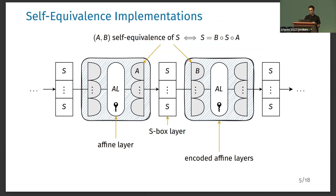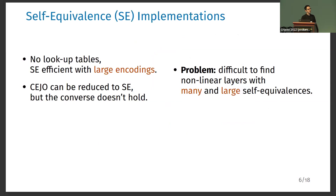The advantages of this type of implementation are that the encoded affine layers can be implemented with matrices, so no lookup tables are needed. This means that if the S-box layer or the non-linear layer has large self-equivalences, this type of implementation can use large components. Another advantage is that previous attacks have shown that CD implementations can be reduced to self-equivalence implementations. However, the opposite is not true, in particular if the self-equivalence implementation uses large components.